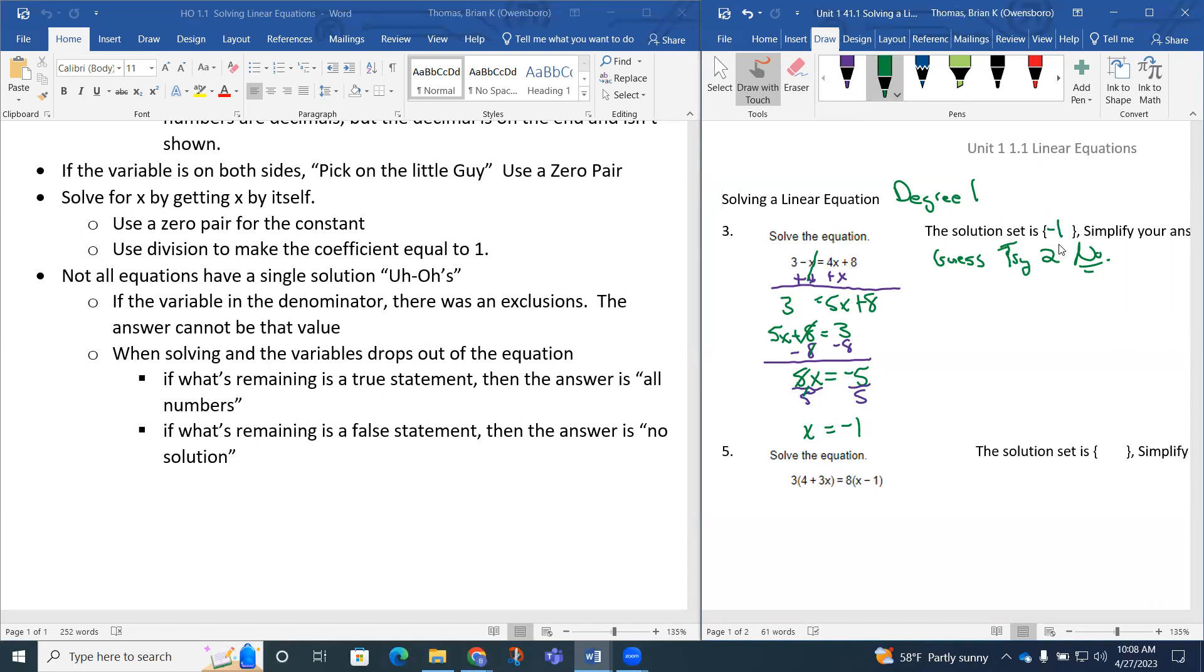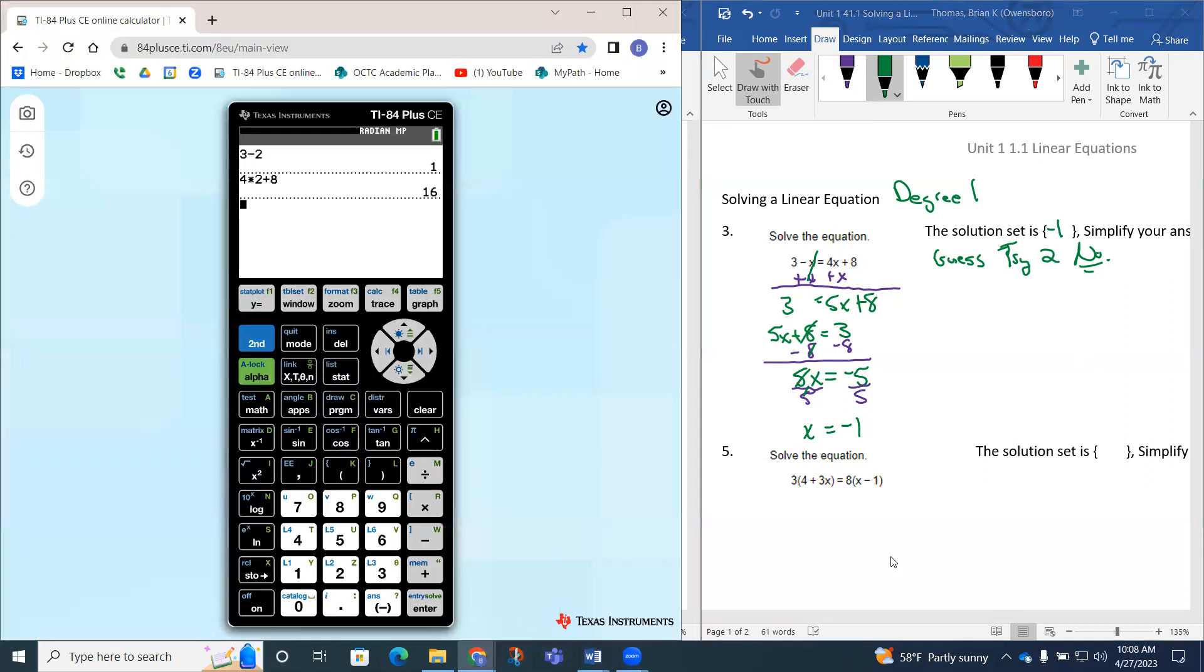If we want to check this, I go to my calculator and substitute negative 1 in for x. We had 3 minus x, so that's 3 minus negative 1, which equals 4.